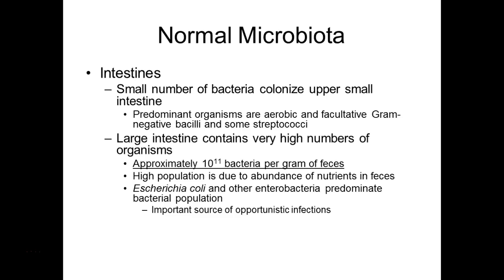When food gets to the large intestine, it's essentially waste for us. What we're going to digest, we've already digested in the stomach and small intestine. We can still do some absorption of nutrients in the large intestine, but no more digestion. Now it becomes food for the bacteria that live there. One gram of feces contains about a billion bacteria. We have a symbiotic relationship — we feed them, give them a place to live, and some even produce essential vitamins we need.